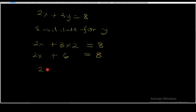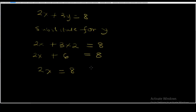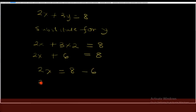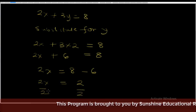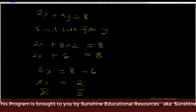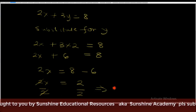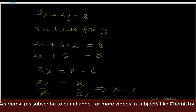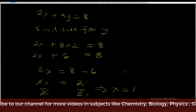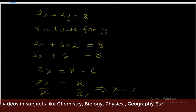Take the 6 to the other side — it becomes minus 6. So 2x is equal to 8 minus 6, which equals 2. Divide both sides by 2: x is equal to 1. So our final answer is y equals 2 and x equals 1.